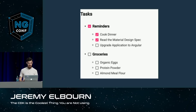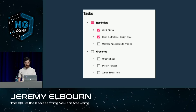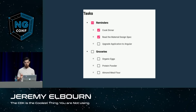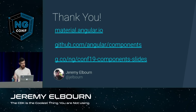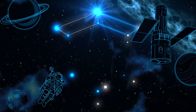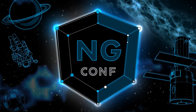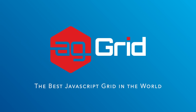You can see that we have some checkboxes here — this is the MatCheckbox we have today. We can compare that to the MDC-based checkbox: they look almost identical but there are some very small subtle changes — a little different spacing, and it's a bit more on spec for Material Design. We're really excited about how this is going to evolve and provide a better experience for Material Design in the future. That's all I have time for today. Thank you so much for coming. You can find more information at material.angular.io, our GitHub repository is angular/components, and you can find these slides at g.co/ng/conf19-components-slides.